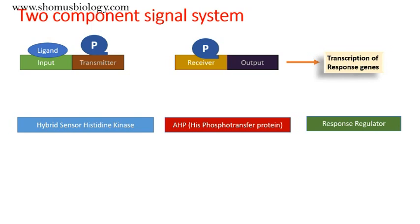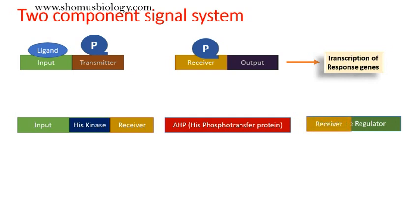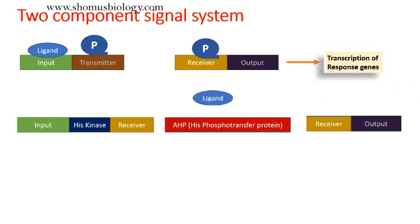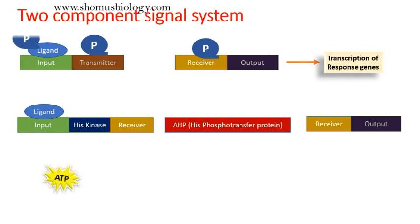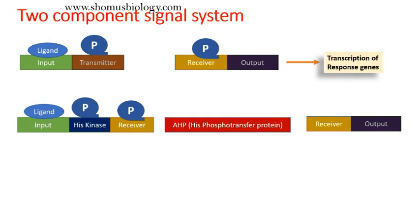Now let's see how signaling will work with AHP. The histidine kinase is divided into an input region, a histidine kinase phosphorylation domain, and a receiver region. The response regulator is divided into a receiver and an output region. A ligand will come and bind to the input region, causing autophosphorylation of the histidine kinase.